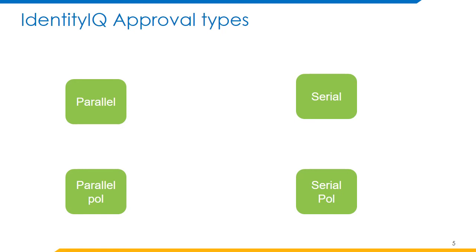Parallel approval: approvals are processed concurrently and there must be consensus. We wait for all approvers to approve, then we provision. If the first approver rejects, we terminate the entire approval. Parallel Poll: approvals are processed concurrently but consensus is not required. All approvals will be processed — we do not stop if there are any rejections.